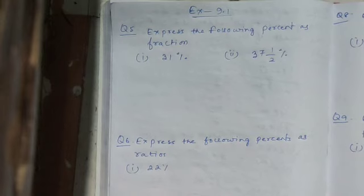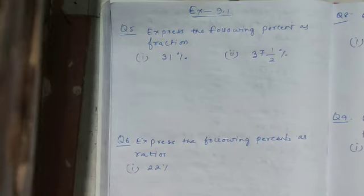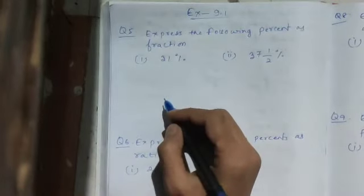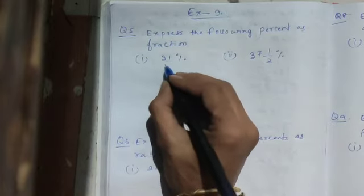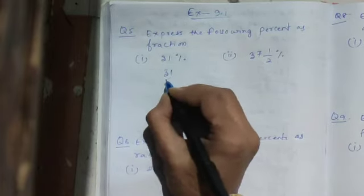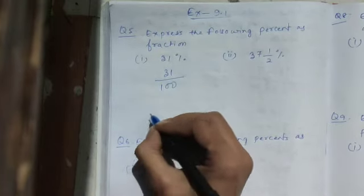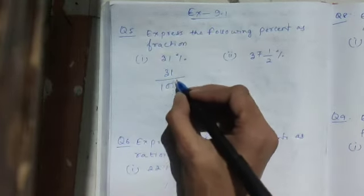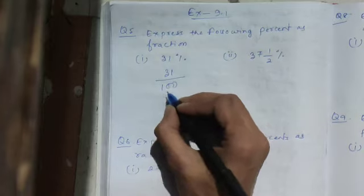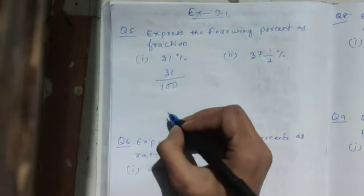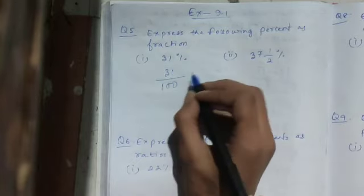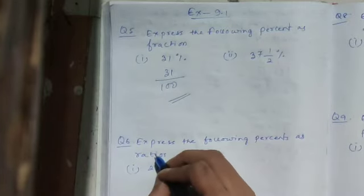First question: express the following percent as fraction, starting from question number 5. The number given is 31¼%. To convert percent to fraction, we write the number divided by 100. If we can cancel, we write the simplest form. Here we cannot cancel, so that is the answer.